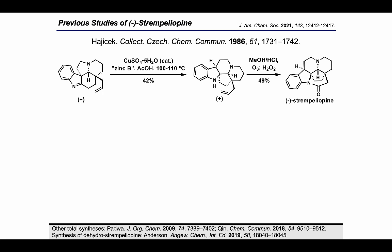In the recent decade, strempeliapine has been completed by the groups of Padwa, Qin, and Anderson, and was first completed by Hajizac in 1986, where they subjected an indolenium substrate to catalytic copper sulfate pentahydrate and a zinc batch they labeled as zinc B in boiling acetic acid. This affected a skeletal rearrangement into the desired schizozygene scaffold in 42% yield.